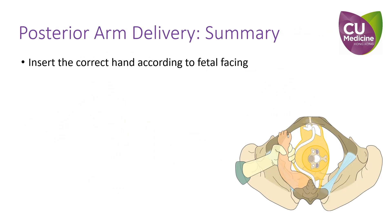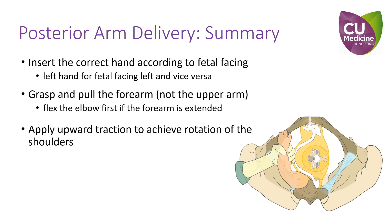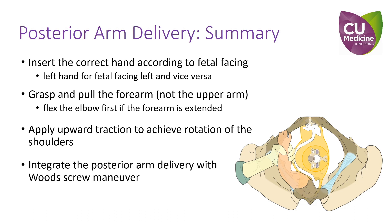To summarize: insert the correct hand according to fetal facing direction; grasp and pull the forearm, not the upper arm; apply upward traction to achieve rotation of the shoulders; and integrate the posterior arm delivery with the Wood Screw maneuver.